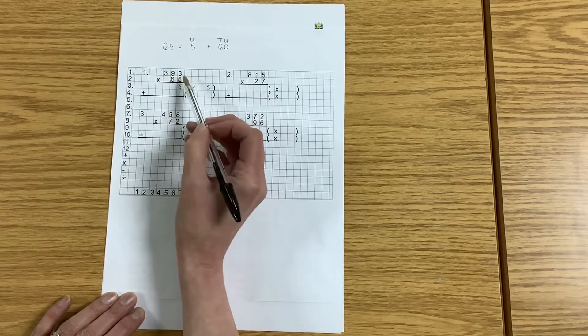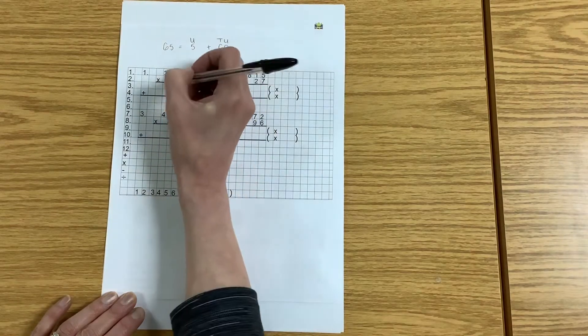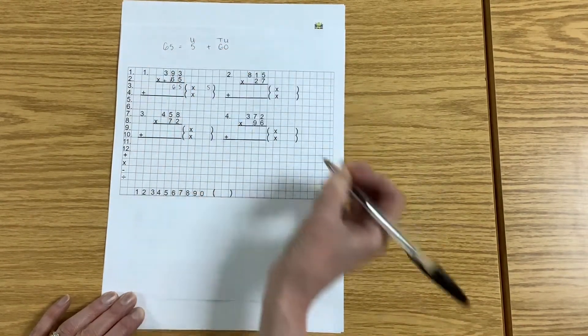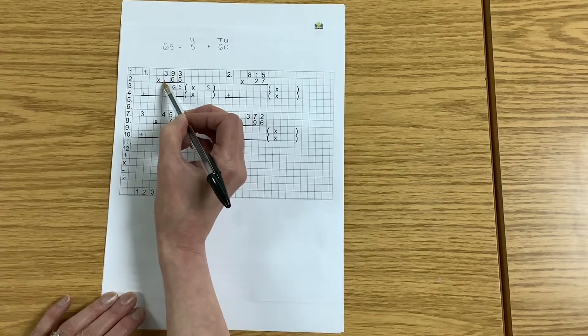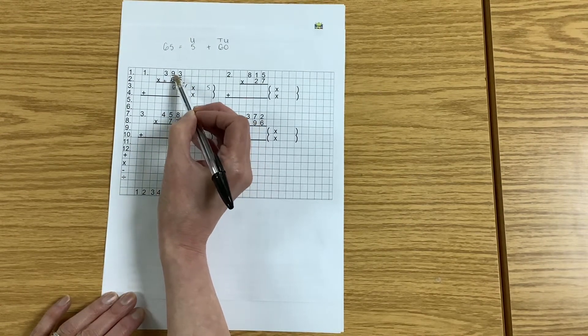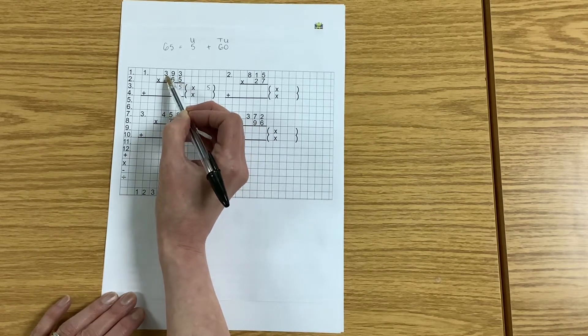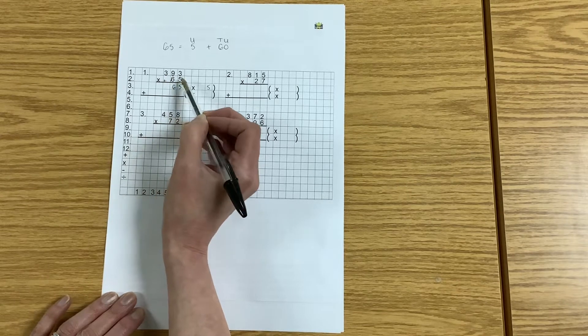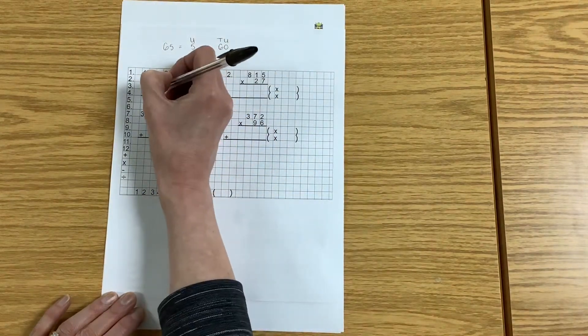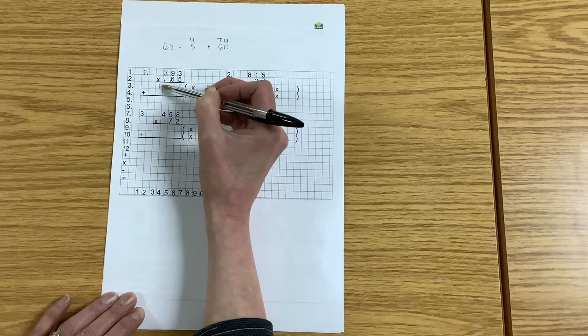5 times 9: 5 nines are 45, add one more is 46. So I write down the 6 and carry the little 4 over into the bottom of the next box. 5 times 3 is 15, but this time I have to add the 4, so 5 times 3 is 15 add 4 makes 19. So 393 times 5 is 1,965.